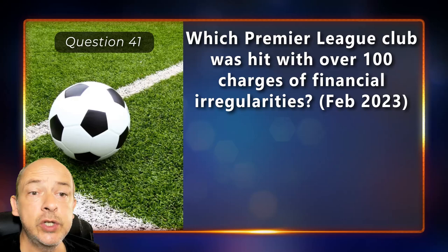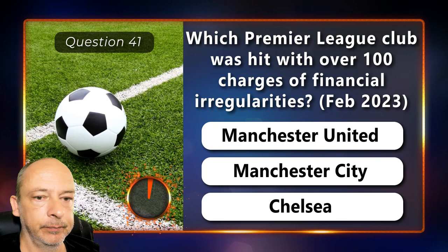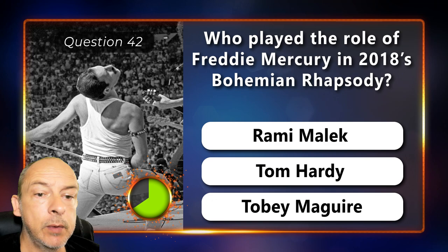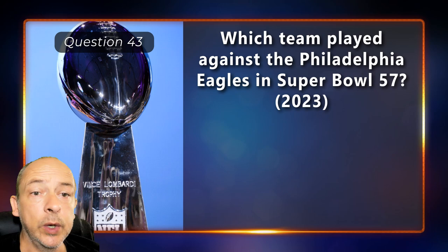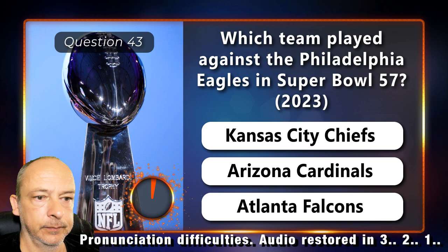Kenya. Which Premier League club was hit with over 100 charges of financial irregularities — Man United, Man City or Chelsea? Manchester City. Who played the role of Freddie Mercury in 2018's Bohemian Rhapsody — Rami Malek, Tom Hardy or Tobey Maguire? Rami Malek. Which team played against the Philadelphia Eagles in Super Bowl 57? The Kansas City Chiefs.